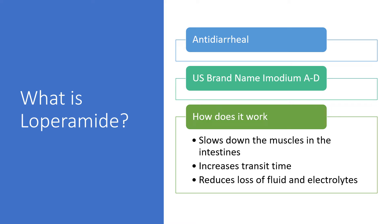So what is loperamide? It is an anti-diarrheal medication, very commonly known in the U.S. as Imodium AD. Sometimes you'll see it combined with simethicone, which can help manage some gas symptoms that can occur with diarrhea. Many times you will see store brand products as well — many generics simply labeled anti-diarrheal — but if you look at the package, the active ingredient should be loperamide.